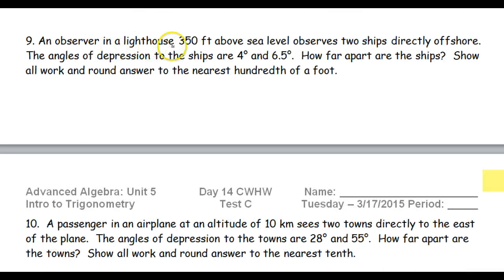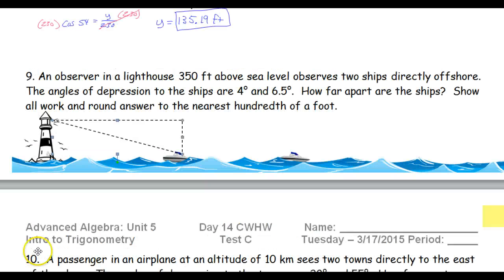Number nine: an observer in a lighthouse 350 feet above sea level observes two ships directly offshore. The angles of depression are 4 degrees and 6.5 degrees. How far apart are the ships? Round your answer to the nearest hundredth of a foot. So here's a picture — you have a lighthouse and two ships directly offshore, and the lighthouse is 350 feet tall. We have these angles of depression.